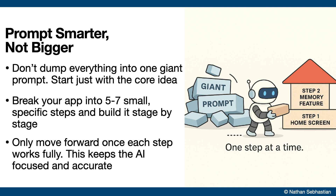But if you saw what I just did a moment ago, I didn't do that. I started simple — I just gave Roar the core idea of the app I wanted to build and nothing more. Why is that? Because the secret here is to build in stages. Don't overwhelm the AI with a wall of instructions — just focus on one part of the app at a time.